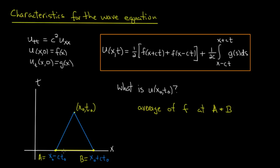It's interesting that we can actually also think of this integral as something of an average. So the average value of g from the point a to b, that's 1/(b-a) times the integral from a to b of g. And in fact, if you just do the arithmetic, you see that this is 1/(2ct0) integral from x0-ct0 to x0+ct0 of g.